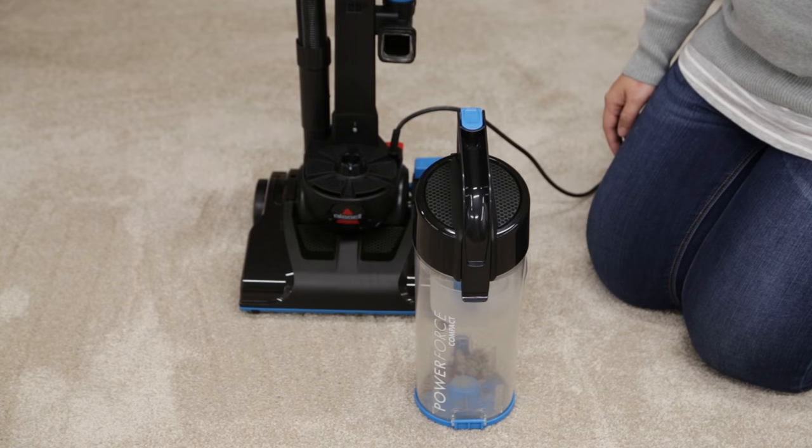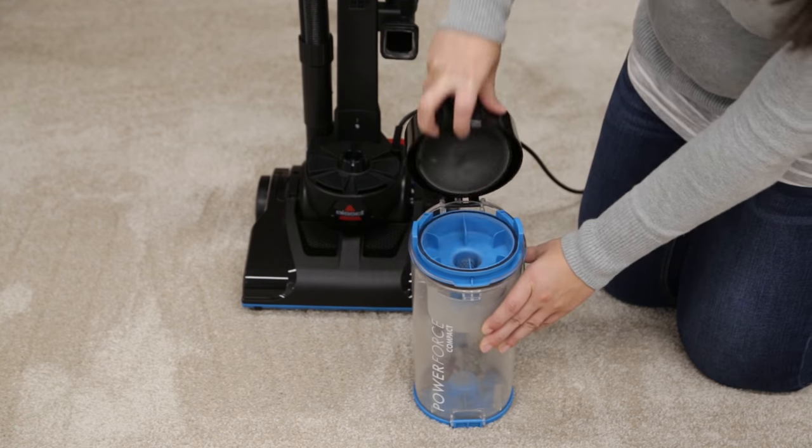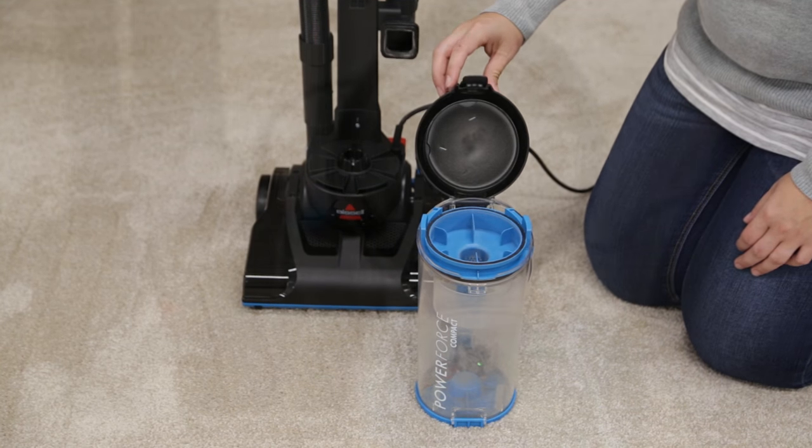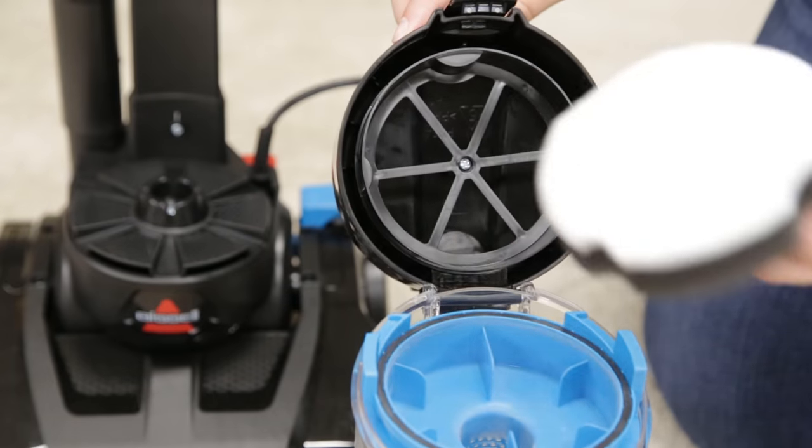The filter is located inside the dirt container lid. Open the lid by lifting the release latch. Grasp the filter and pull up to remove.